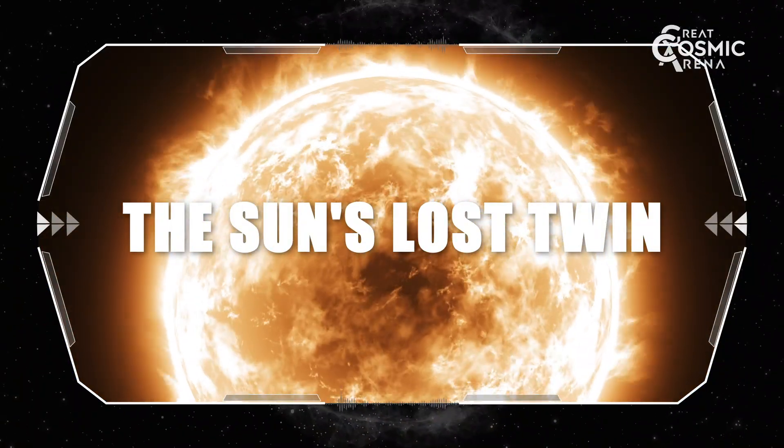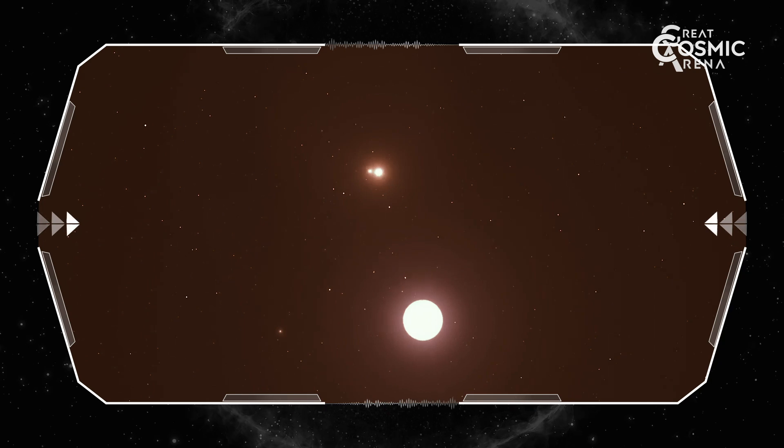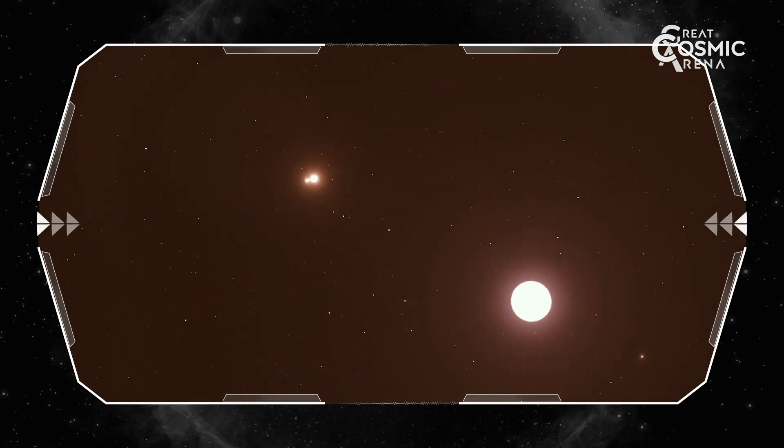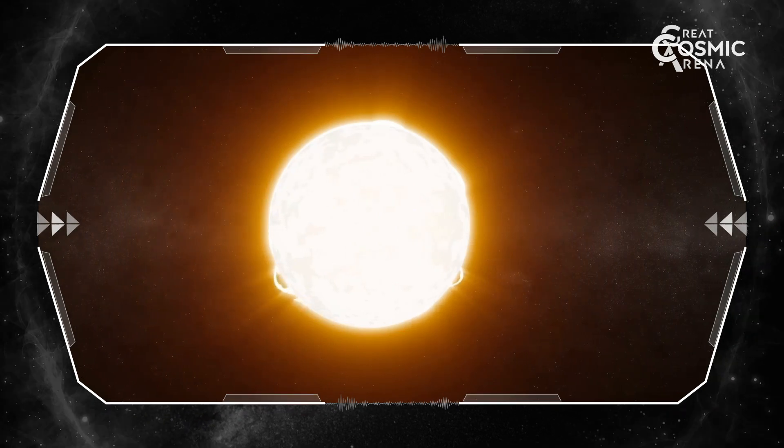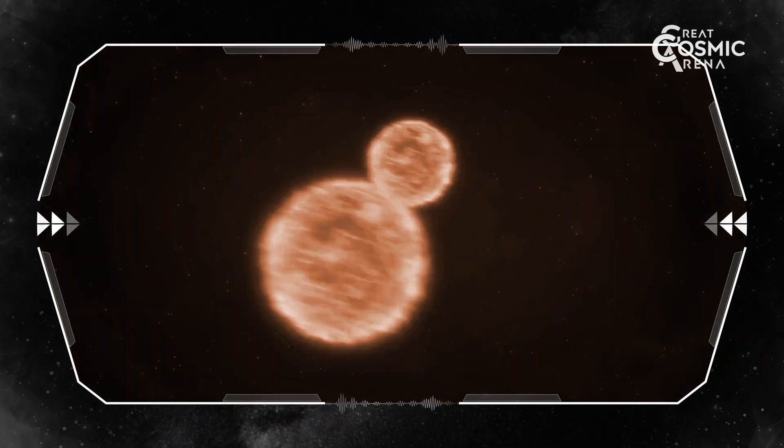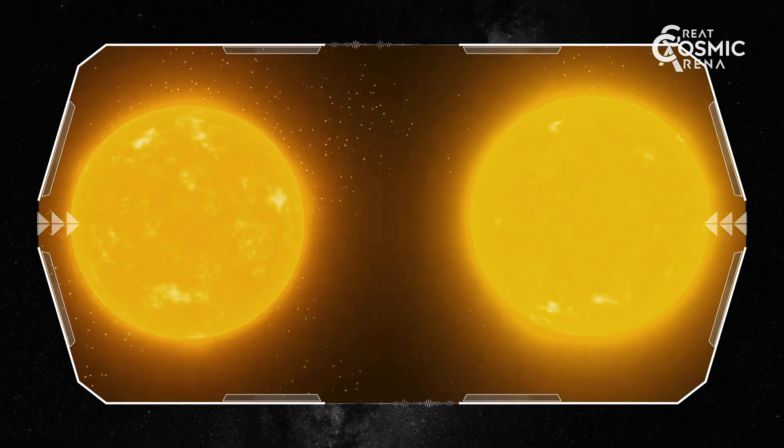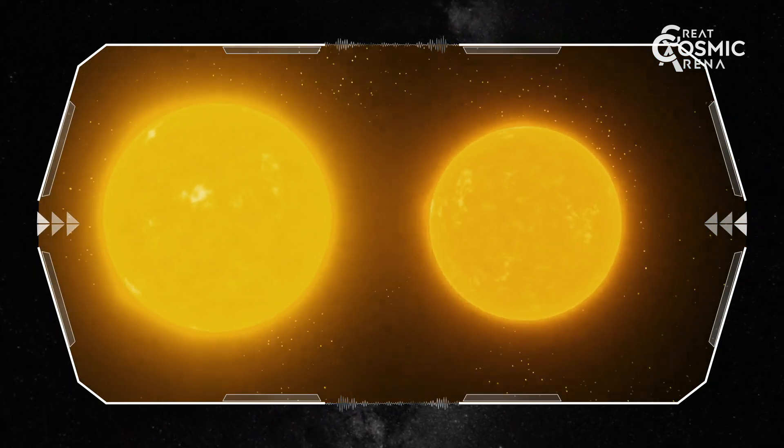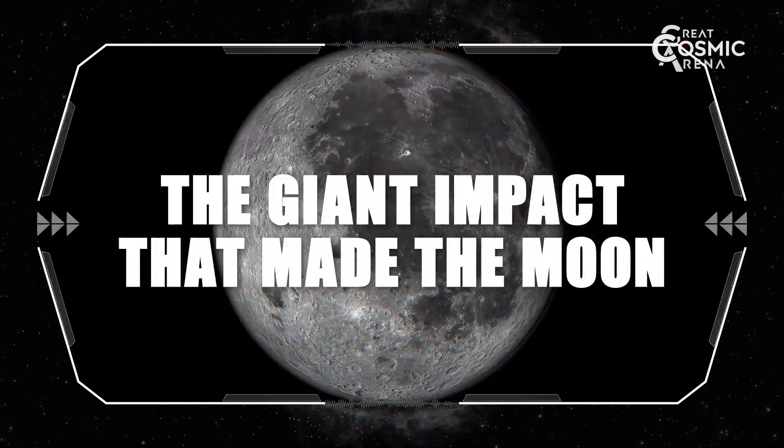The sun's lost twin. Stars rarely form alone. They often emerge from giant clouds of gas and dust alongside other young stars. Some theories suggest our sun likely began life in a similar cosmic nursery. It's possible the sun had a twin born within this cluster, but gravitational interactions may have flung it far away billions of years ago.